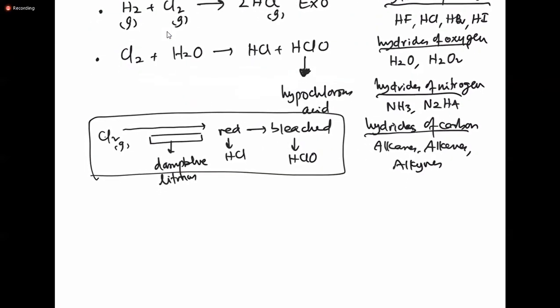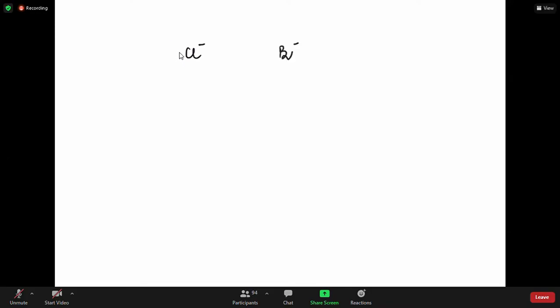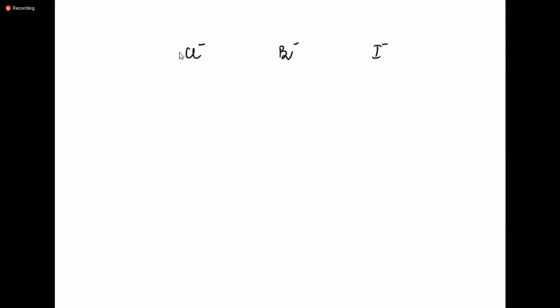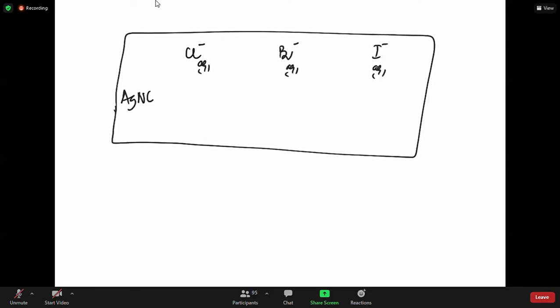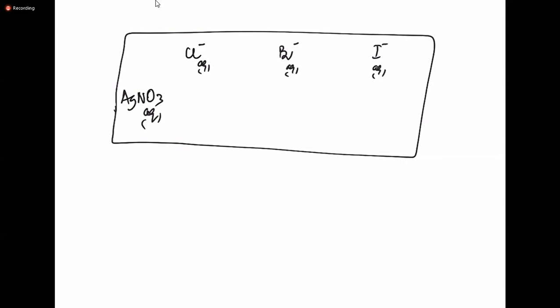In this chapter, halogen ions are called halides. The famous ones are: chloride ion, bromide ion, and iodide ion — forming salts like sodium chloride, sodium bromide, and sodium iodide. To identify these anions, the very famous reagent used is aqueous silver nitrate, which is used to test for halide ions.